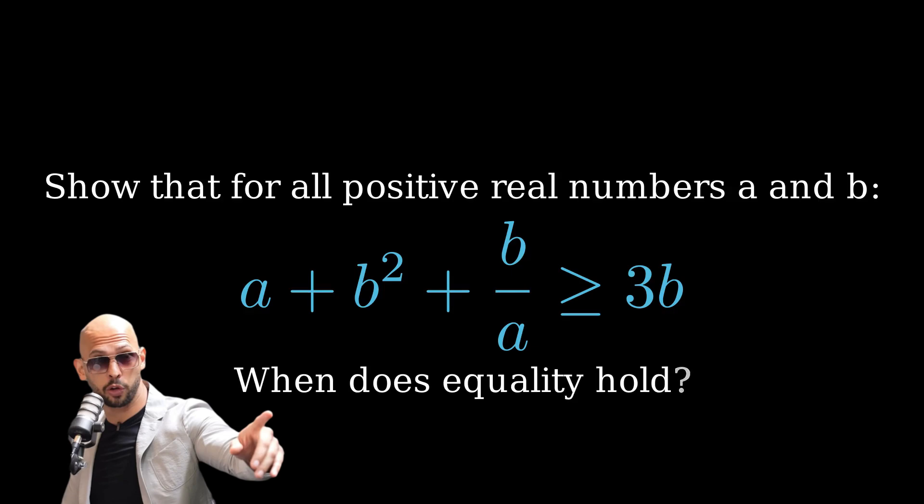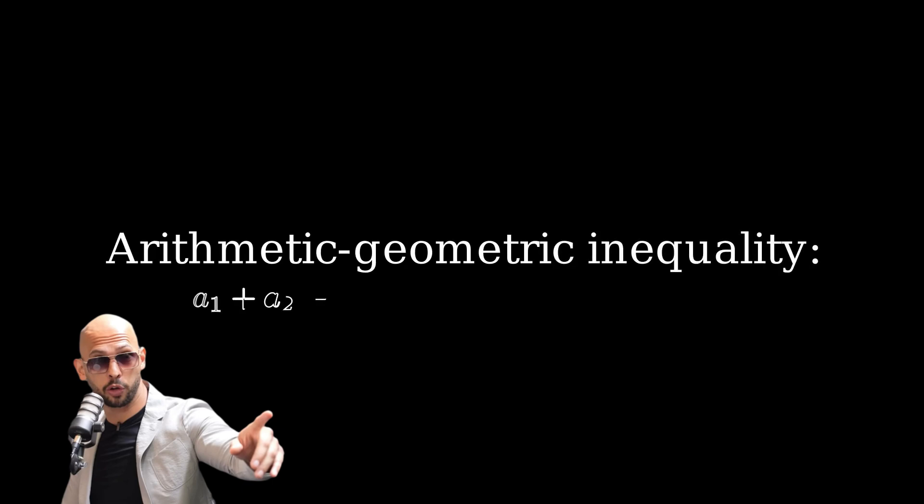Our weapon of choice, the arithmetic geometric inequality. This isn't just playing with numbers. It's strategic warfare, understanding that for any positive real numbers, their arithmetic average reigns supreme over their geometric average. That's our secret weapon.